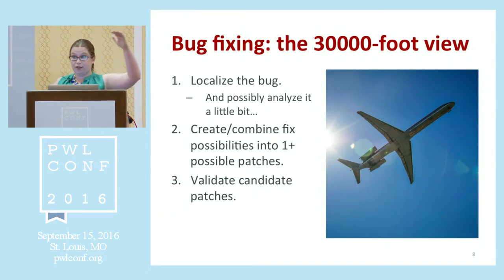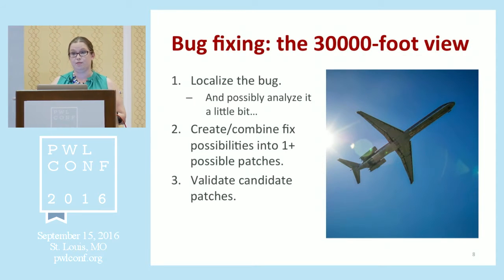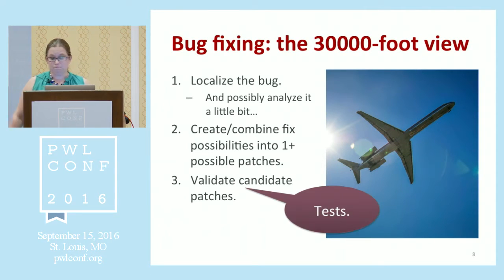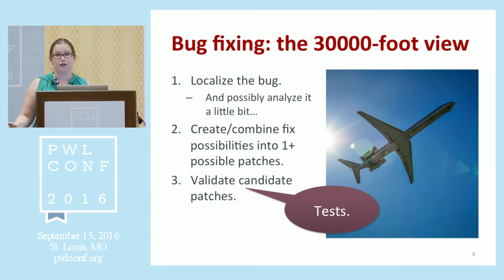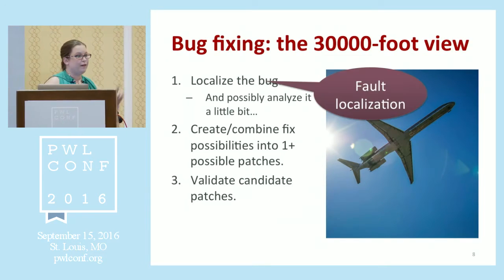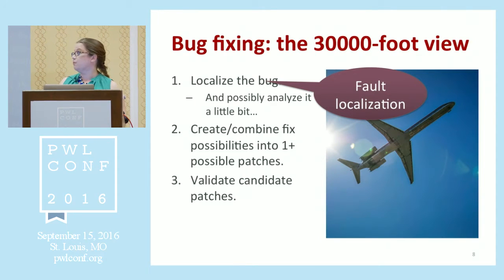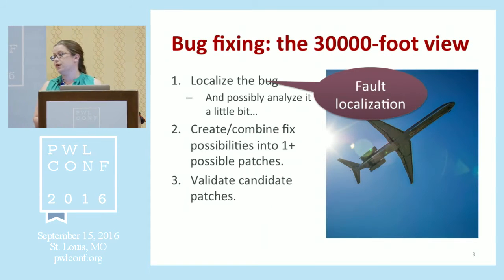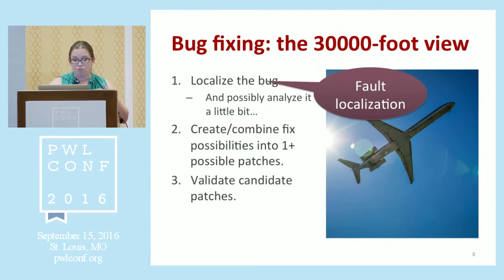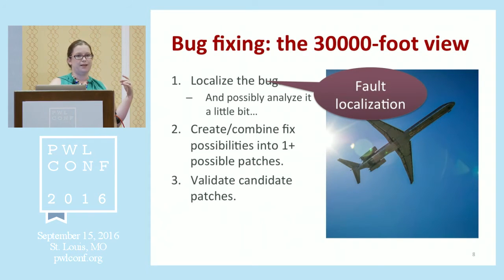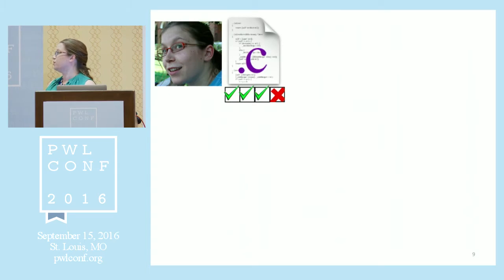Two of these steps are actually the same in every technique you could possibly read. Step three — validating candidate patches — right now we're all using tests. I'm hoping this makes the developers in the audience uncomfortable, because it should be. The first step is also very similar between all different techniques: bug localization or fault localization is an area of research in its own right, and program repair research just punts to the existing literature and reuses techniques that have been proposed by others.